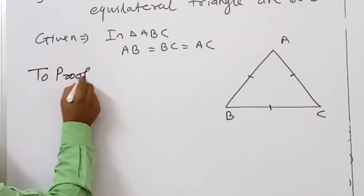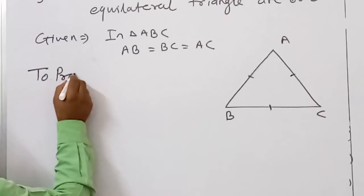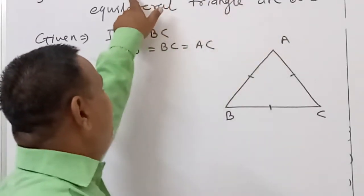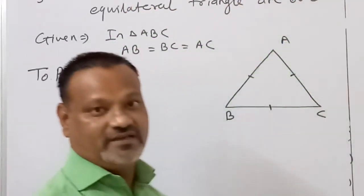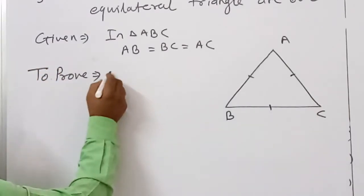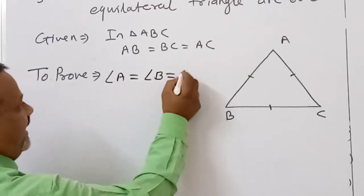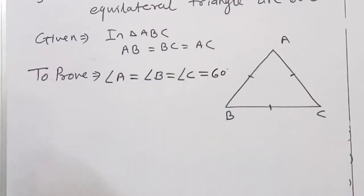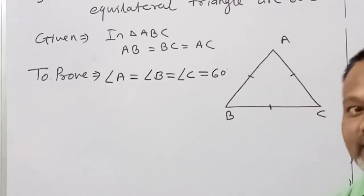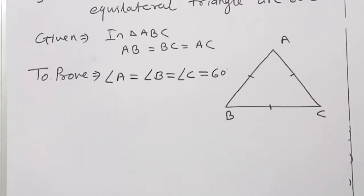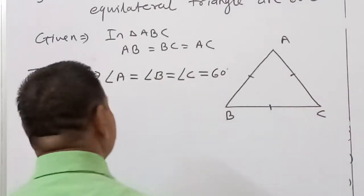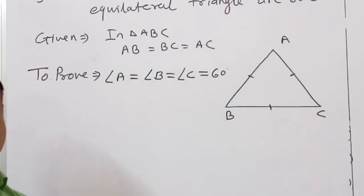To prove: we have to prove that each angle measures 60 degrees — angle A equals 60, angle B equals 60, and angle C equals 60 degrees. We can also call the equilateral triangle by another name: equiangular triangle. Equilateral means all three sides are equal; equiangular means all three angles are equal. Here we want to show that an equilateral triangle is also an equiangular triangle.